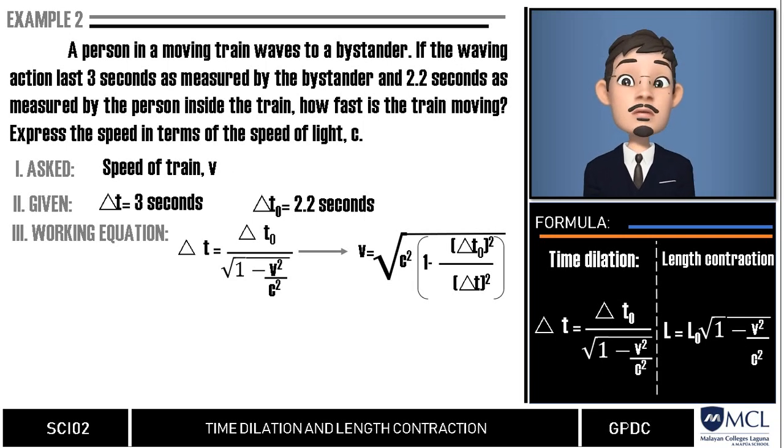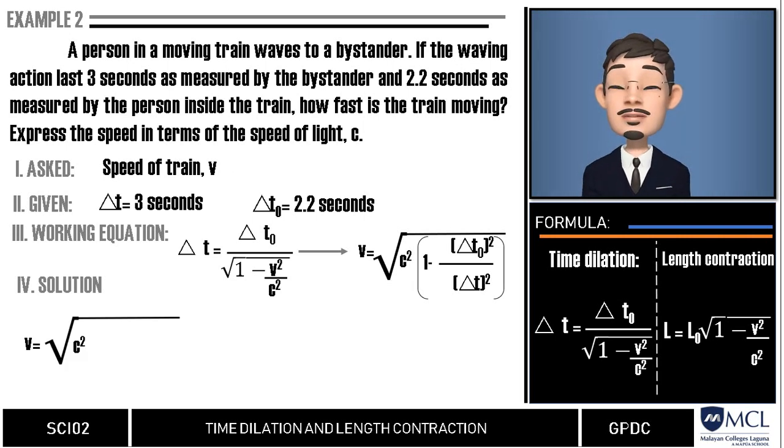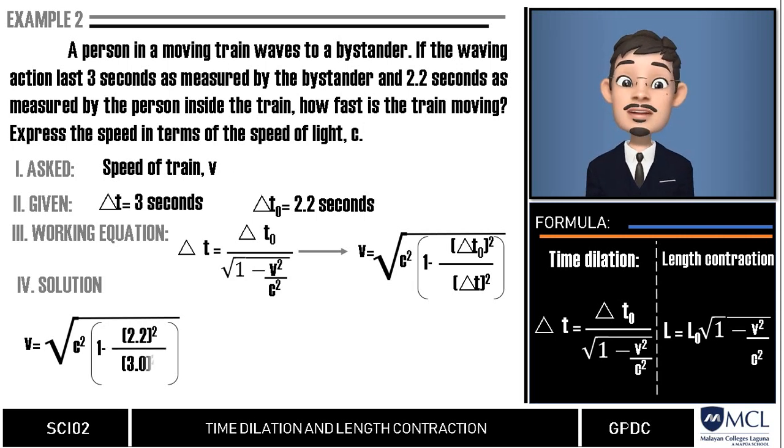From our formula, we substitute the values. So, v is equal to square root of c squared multiplied by 1 minus 2.2 squared over 3.0 squared. Now, since the problem asks to express the speed in terms of speed of light, we may not substitute the c constant value. Our focus would be this, which is equivalent to 0.462.